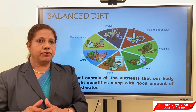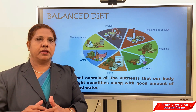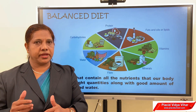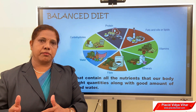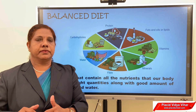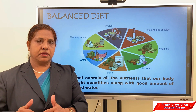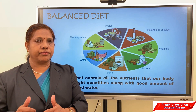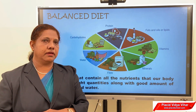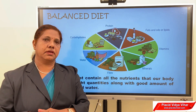Do we need expensive food to make a balanced diet? No. We can make our diet balanced from commonly available materials like pulses, groundnuts, soybeans, sprouted seeds like gram, fermented foods like idli, bananas, spinach, and commonly available vegetables and fruits. There is no need to buy expensive food to have a balanced diet.